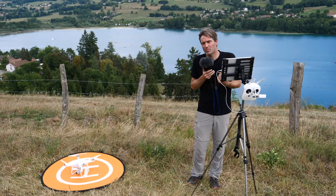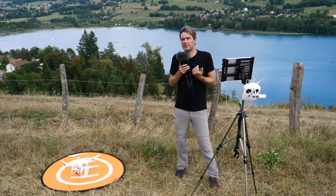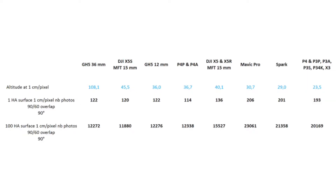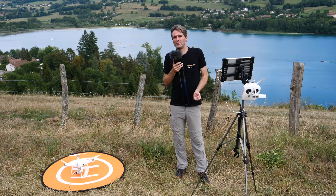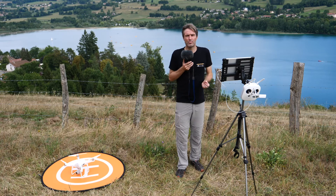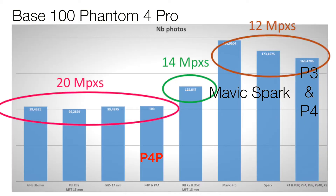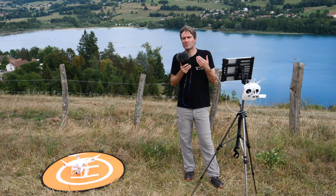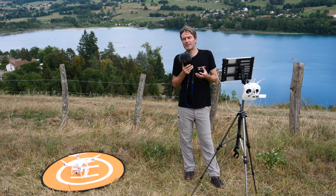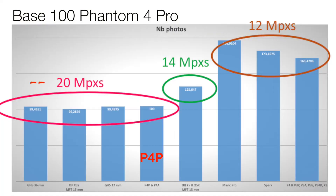The number of photos to take is closely linked to the sensor definition. For the Spark, Mavic, Phantom 3, and classic Phantom 4, the number of photos is roughly equivalent. Then we find the 20-megapixel sensors with the Phantom 4 Pro, GH5, and others.